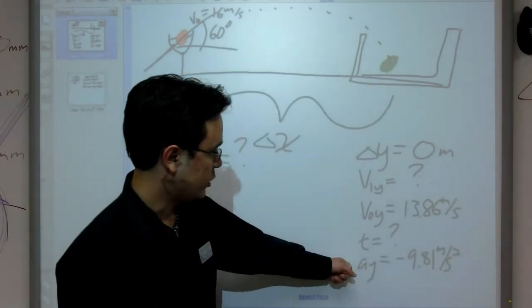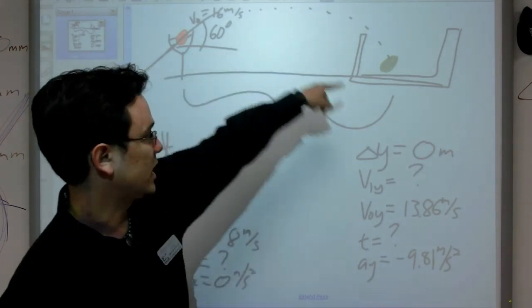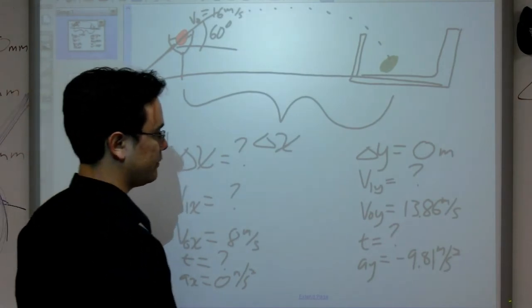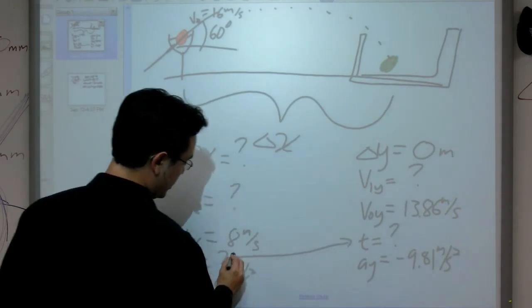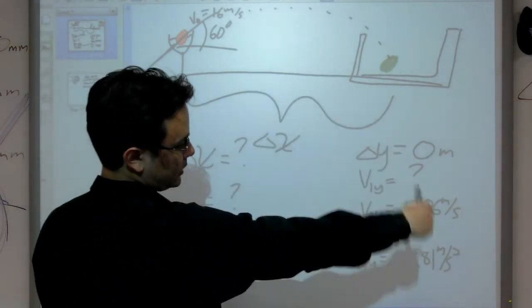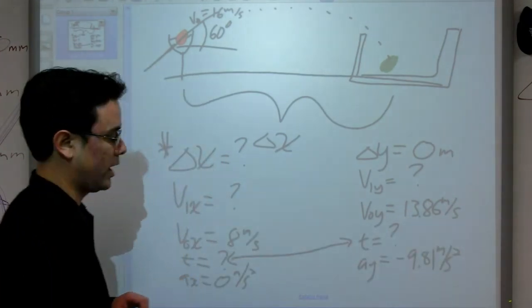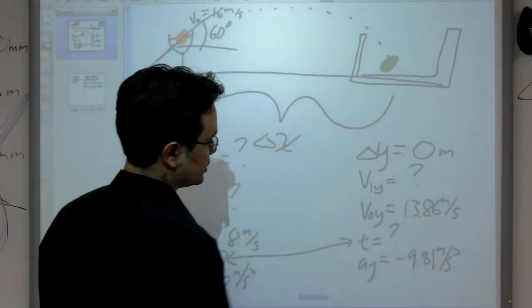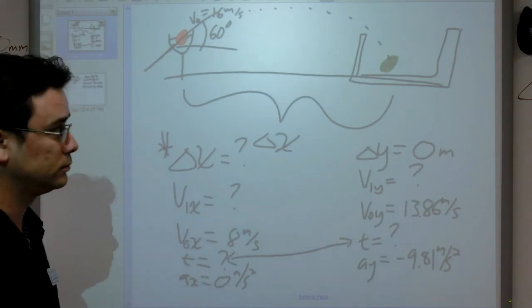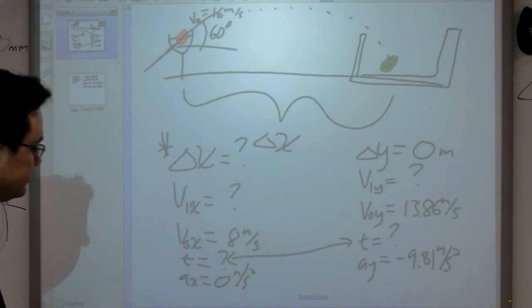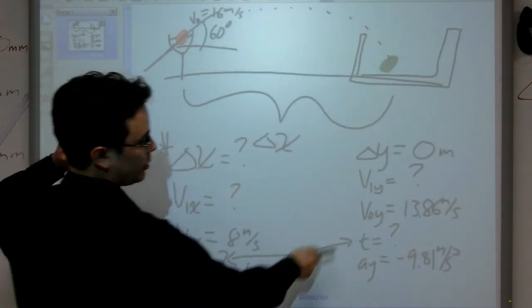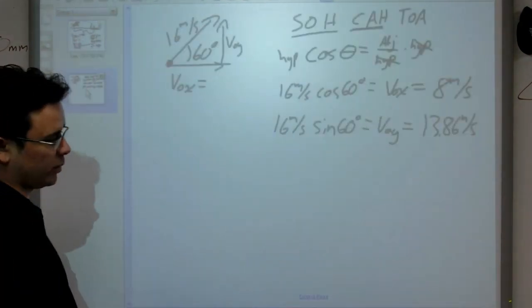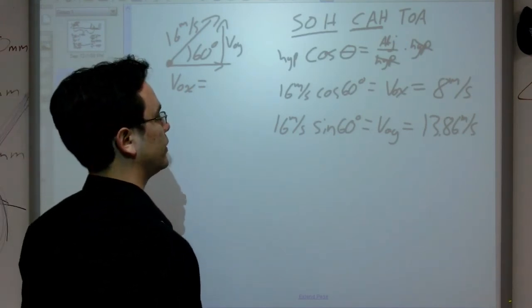In the y, I have my acceleration, my initial velocity, and my displacement, because it's coming back down to the same height that it started. So I can find what I want. In this case, like most projectile motion problems, what the x and the y have in common is the time. Because whatever motion is going on in the y, it ends when it hits the ground. And whatever motion is going on in the x, that ends when it hits the ground. So the time is the same between the two. So I want to find the time because that's my bridge between the two dimensions. What I don't have and don't care about in my y direction is my final velocity.